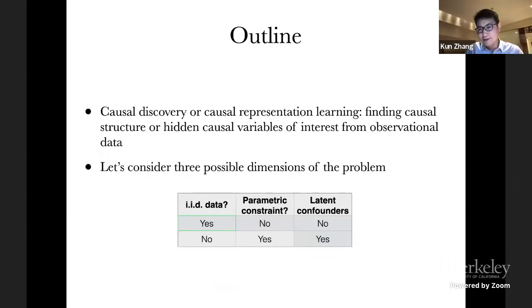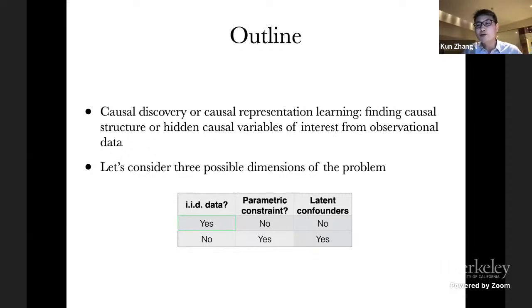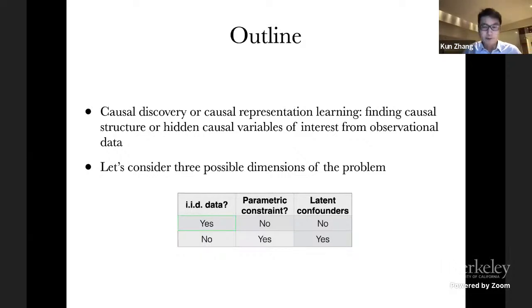The first dimension is whether the data is IID. The second is whether we can benefit from parametric constraints on the causal influence or causal model. The third is whether there are latent confounders in the underlying causal model. We have three dimensions — let's consider different combinations.